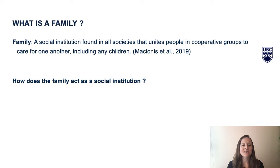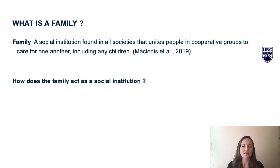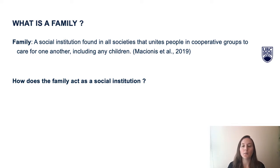In sociology, we observe and analyze the family as a social institution. The sociological definition of the family is: a social institution found in all societies that unites people in cooperative groups to care for one another, including any children.